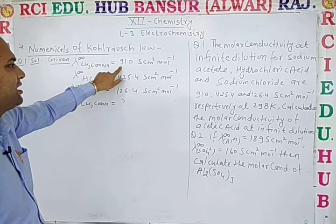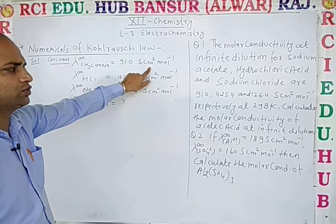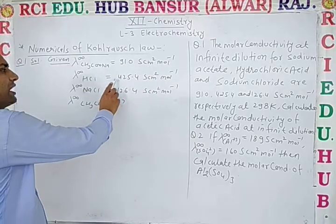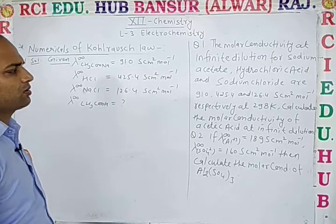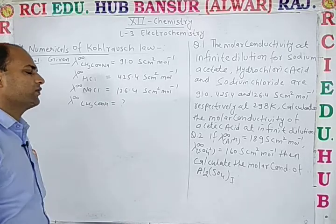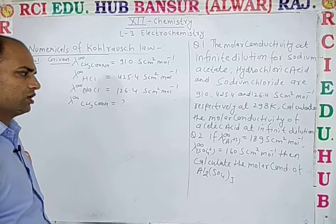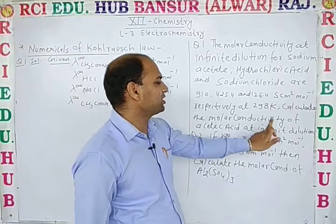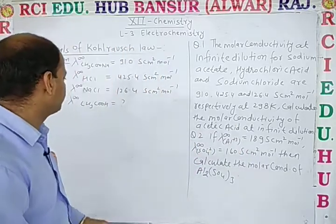The given values are: λ∞(CH₃COONa) = 91.0 cm² mol⁻¹, λ∞(HCl) = 425.4 cm² mol⁻¹, and λ∞(NaCl) = 126.4 cm² mol⁻¹. Calculate the molar conductivity of acetic acid at infinite dilution.